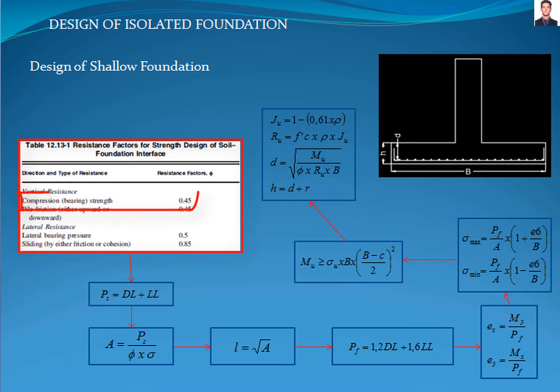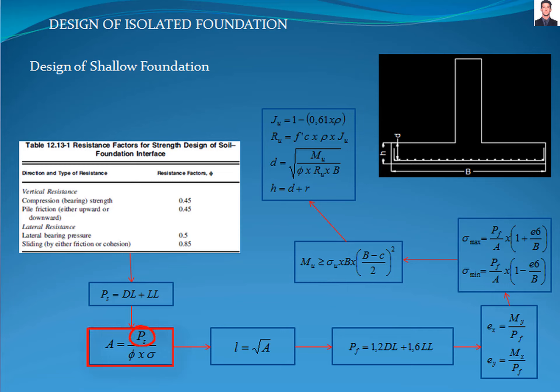For this example, the reduction factor is 0.45. Next, we calculate the service loads transmitted from the columns to the foundation with this equation. The next step is to calculate the foundation area required with this equation, where PS is the service axial load transmitted from the columns of the building, sigma is the bearing capacity of the soil, and phi is the reduction factor.